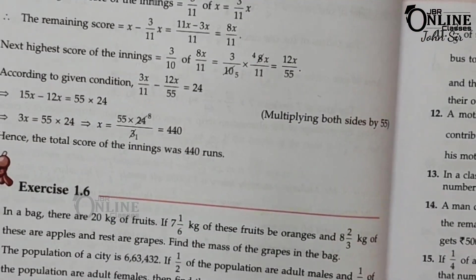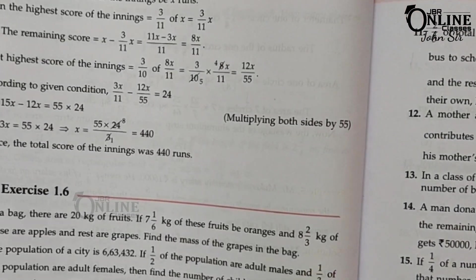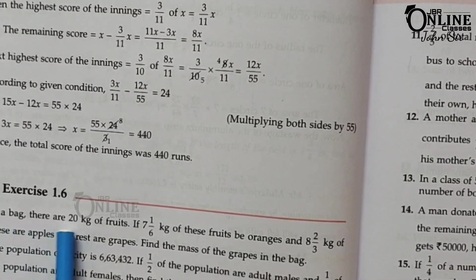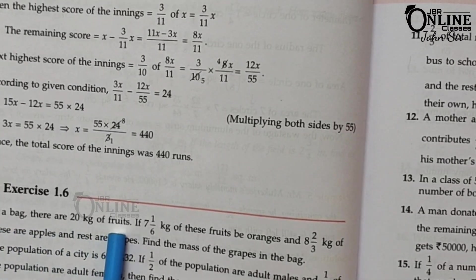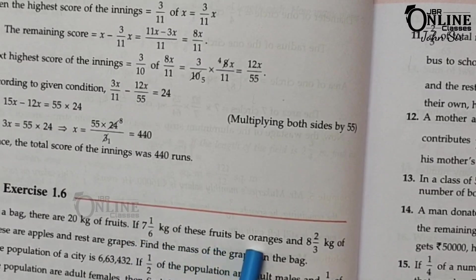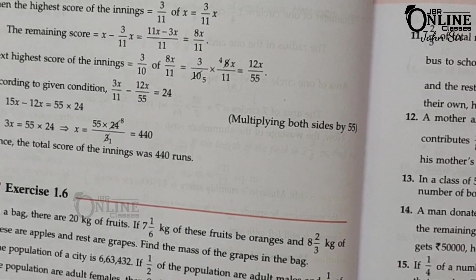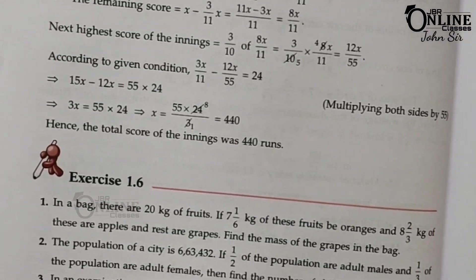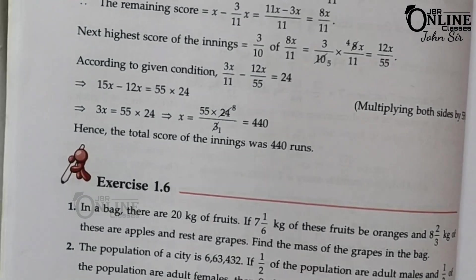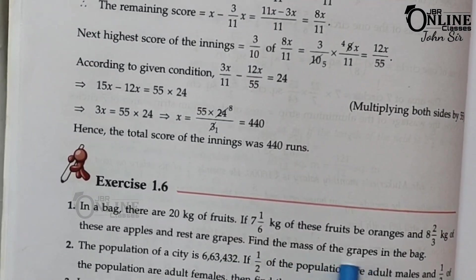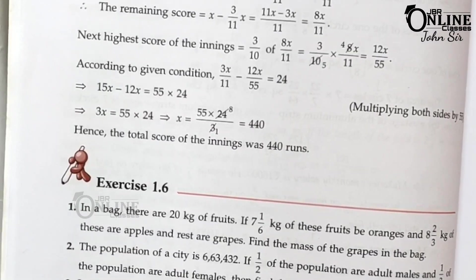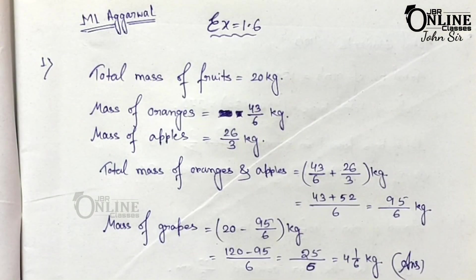The first problem: in a bag there are 20 kg of fruits. If 7 and 1/6 kg of these fruits are oranges, and 8 and 2/3 kg of these are apples, and the rest are grapes, then find the mass of the grapes in the bag.